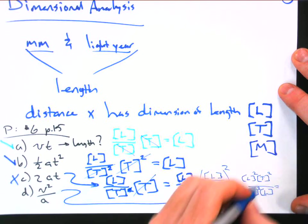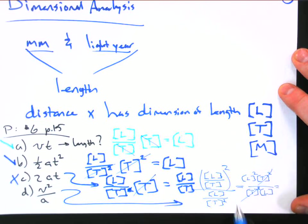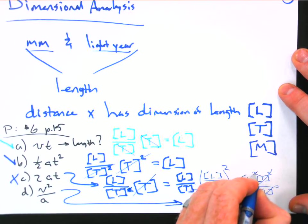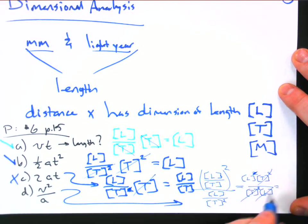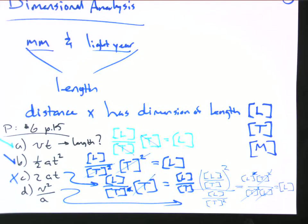So what's going to happen with this guy? I have a time squared and a time squared. Those go away. I have a length squared divided by a length. So that gets canceled, squared get canceled away. And look what I'm left with. Just length. All that business. So yes, that also checks out.